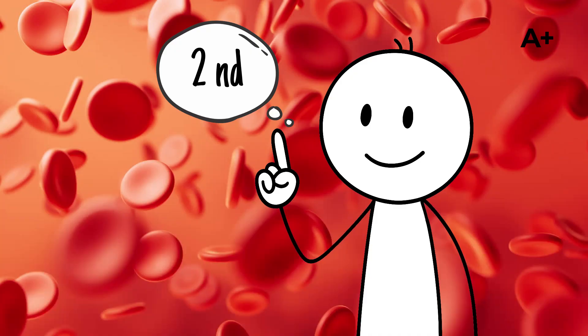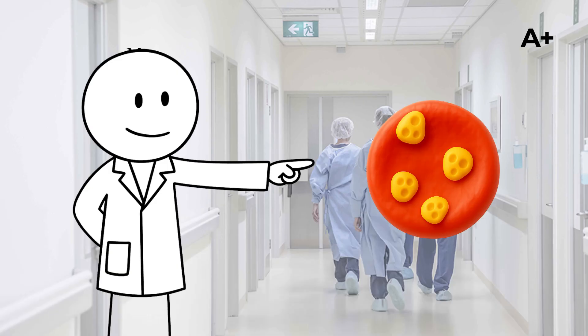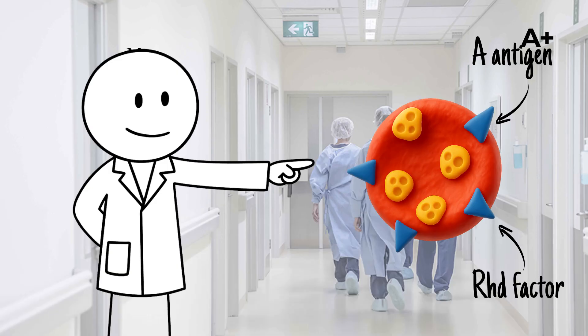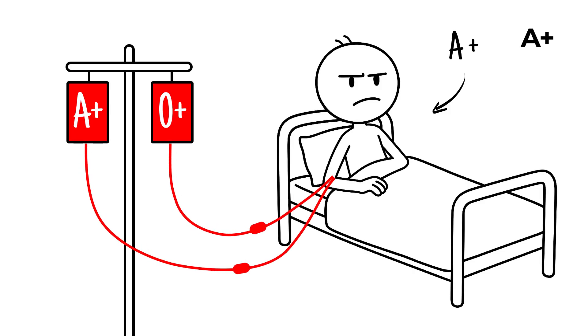A positive is the second most common blood type globally, present in approximately 3 out of every 10 people. It is characterized by the presence of A antigens and the Rh D factor on red blood cells, meaning that individuals with A positive blood can safely receive transfusions from both A positive and O positive donors.